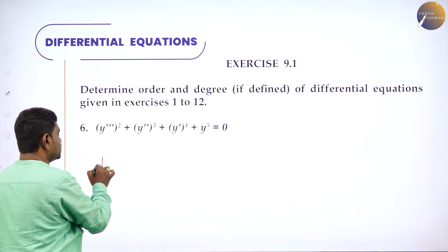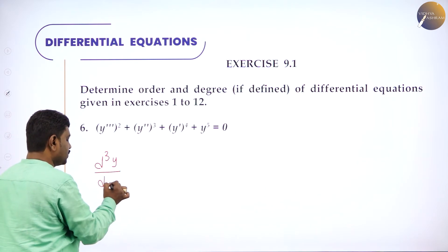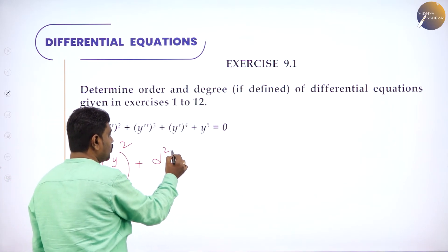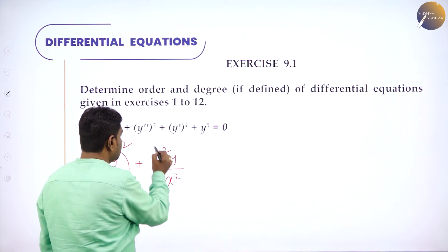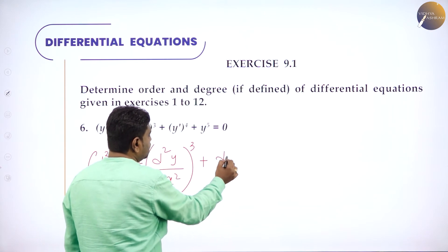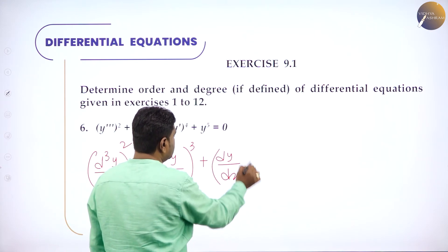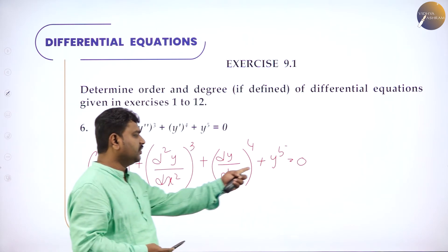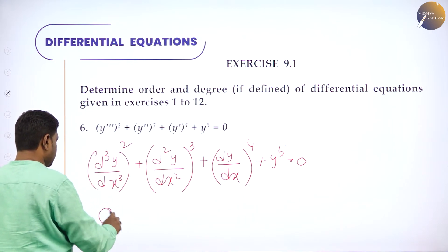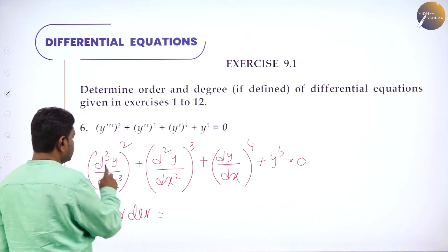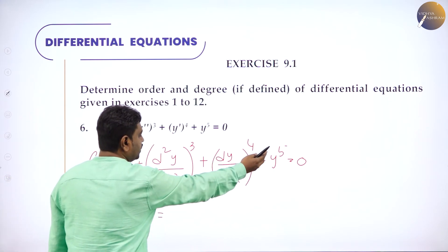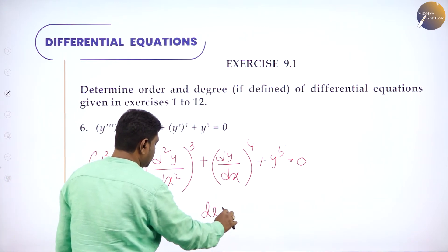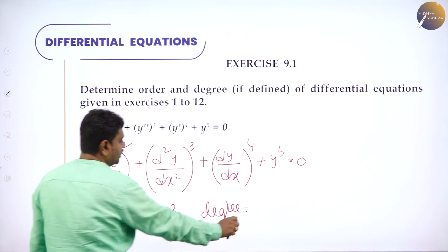Next: (y''')² + (y'')³ + (y')⁴ + y⁵ = 0, which is (d³y/dx³)² + (d²y/dx²)³ + (dy/dx)⁴ + y⁵ = 0. Note that y⁵ is not a derivative term. Maximum times differentiated: 3 times for y''', 2 times for y'', 1 time for y'. So order is 3. Degree means overall power of the highest-order term, which is 2. So degree is 2.